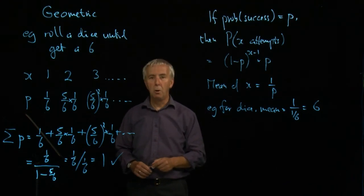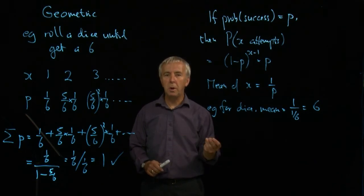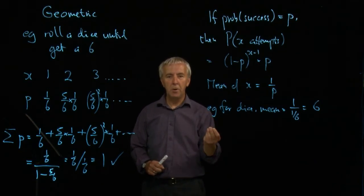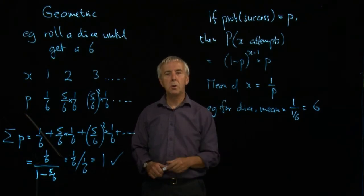If I was tossing a coin and I was waiting for my first tail, how many tosses do I expect to make before I get the first tail? It will be one over a half, which is two. Again, it's very intuitive.